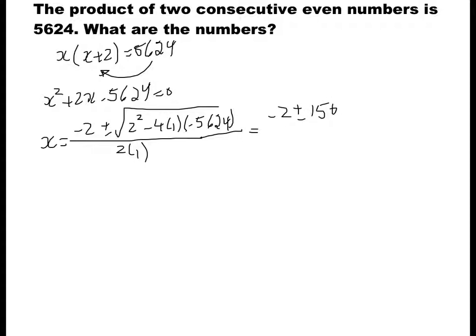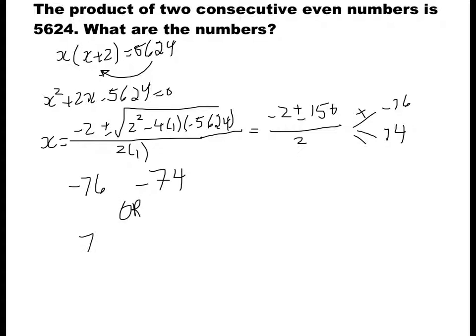Simplifying, we get negative 2 plus or minus 150, divided by 2. There are two solutions: going with addition gives negative 76 for x, and with subtraction gives 74 for x. So the two pairs of consecutive even numbers are negative 76 and negative 74, or 74 and 76.